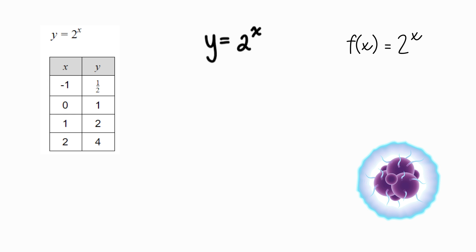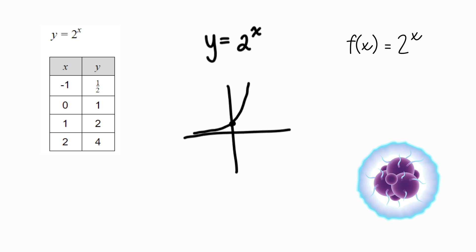This type of function is an exponential function. It grows very fast and it has an asymptote at 0 — a line that the function approaches but doesn't touch. The y-intercept is 1. In this case, the independent variable is in the exponent, and there is still a unique output for every input. So this is an exponential function.